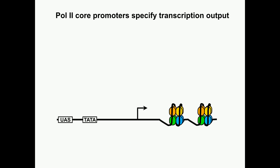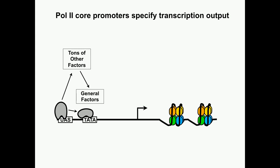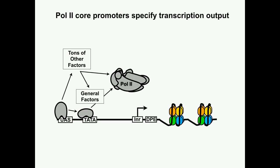In Pol2 initiation, we've got core promoter sequences that are going to recruit DNA binding activators. Activators are going to recruit hundreds of other factors, probably at every single promoter. These factors are going to work with general factors that recognize core promoter elements. The whole job of all these factors together is to get Pol2 to show up at the promoter, at the transcription start site. A lot of times when people think about the mechanisms of initiation, they think initiation is going to be controlled by the power or the strength of the activators and co-activators, and then Pol2 is just going to get recruited and go. What we focus on is the events that happen downstream of the activators and co-activators — we're trying to understand exactly how this process works and how it's controlled.